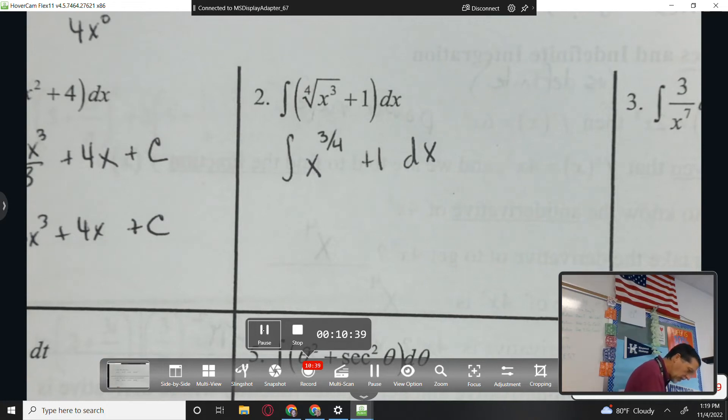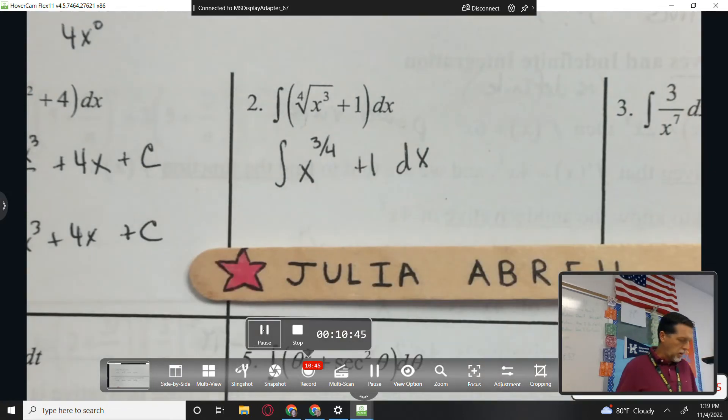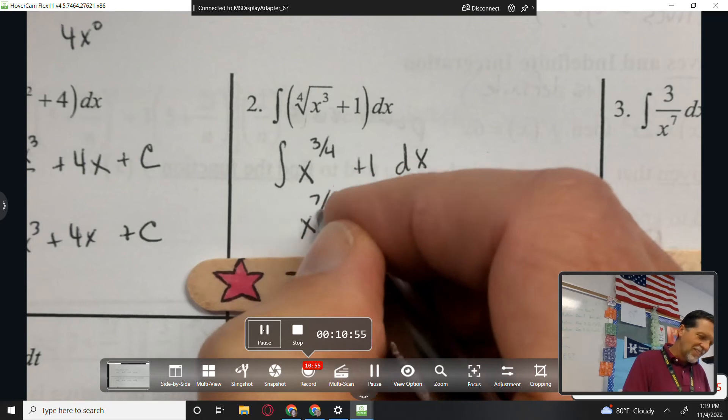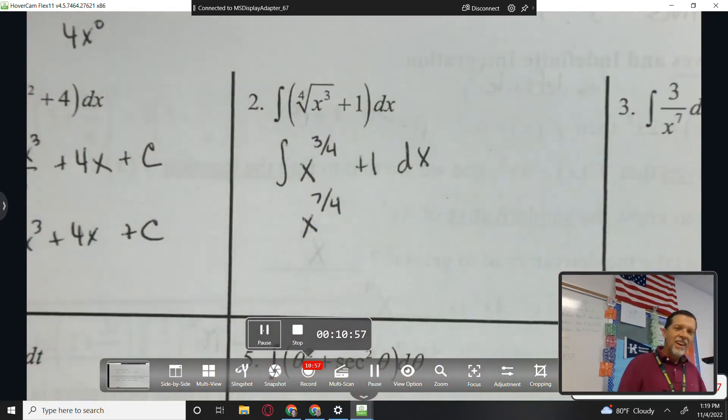Now I need to increase the power by one. This is going to be fun because we get some fractions here. But everybody in here is a fraction expert, especially Julia. So Julia, what's three-fourths plus one? If I increase three-fourths by one, what do I get? Seven-fourths. Very nice. And then I want to divide by the new exponent. So I want to divide by seven-fourths.